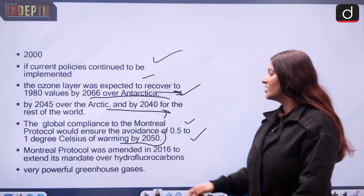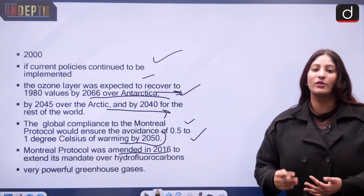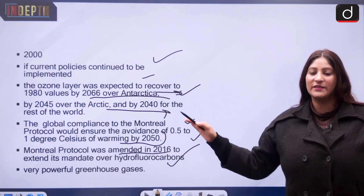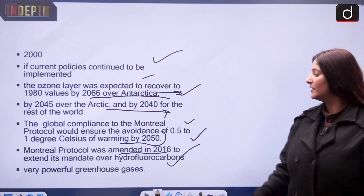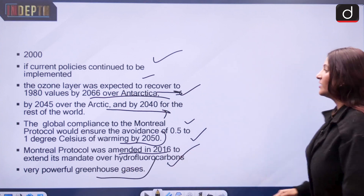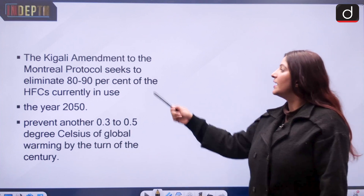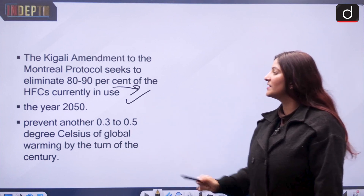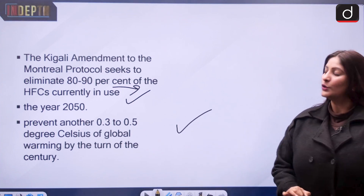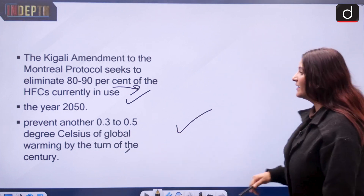The Montreal Protocol was amended in 2016 because the replacement for CFCs — hydrofluorocarbons (HFCs) — turned out to be a very powerful greenhouse gas, increasing the risk of climate change. The Kigali Amendment of 2016 seeks to eliminate 80 to 90 percent of HFCs currently in use by 2050, in order to prevent an additional 0.3 to 0.5 degree Celsius of global warming by the end of the century.